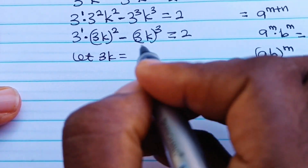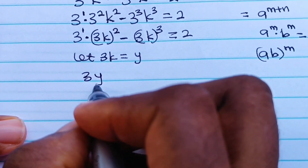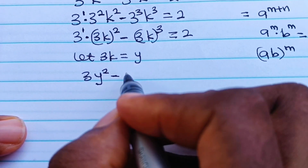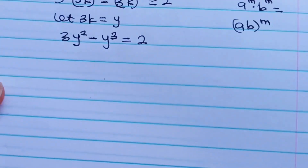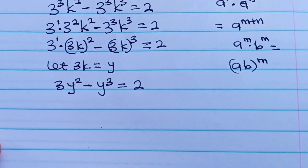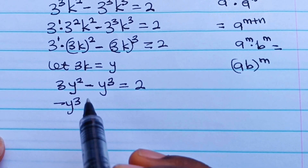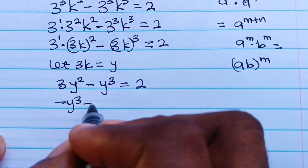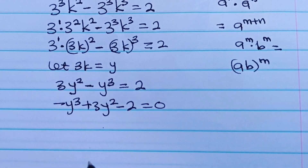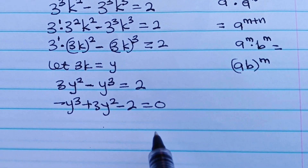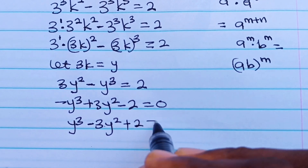Let 3k be equal to y. Therefore we can rewrite the equation as 3 multiplied by y² minus y³ is equal to 2. Rearranging this cubic equation: minus y³ plus 3y² minus 2 equals 0. Multiplying through by minus 1, we get y³ minus 3y² plus 2 is equal to 0.